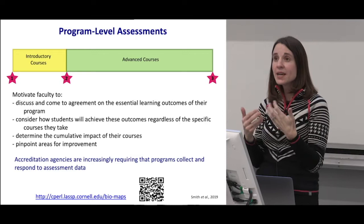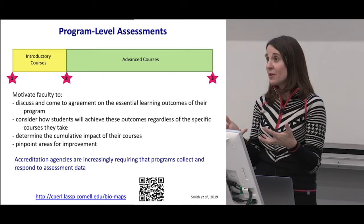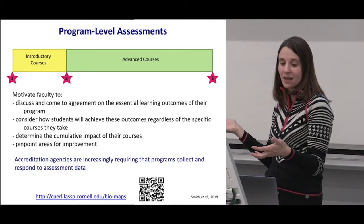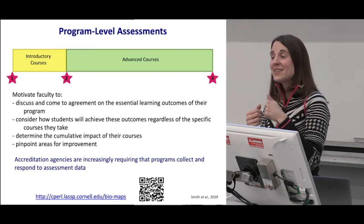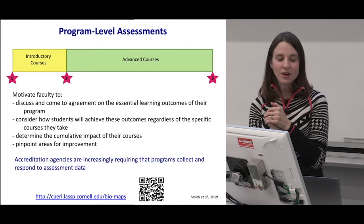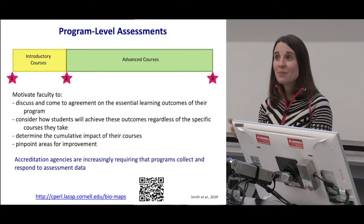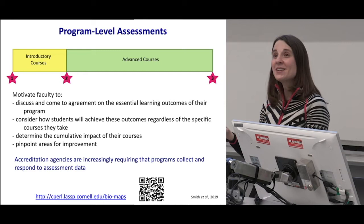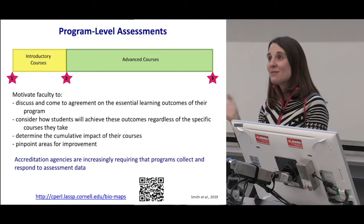The idea about these assessments is to motivate faculty to discuss and come to agreement on essential learning outcomes for the program, to consider how students will satisfy those outcomes given that they often have many course choices, and to determine the cumulative impact of courses. For example, when we gave this assessment at the University of Maine, we found students had not learned much about genetic drift. When we talked about it with faculty, nobody had been emphasizing it — and having that data allowed us to revamp how it was being taught across multiple courses.